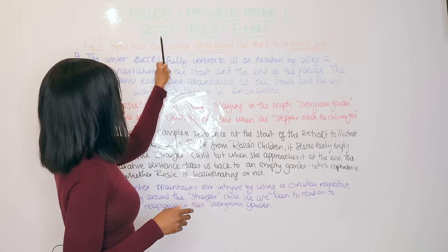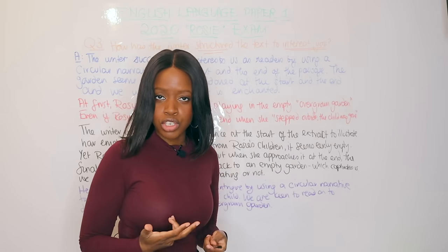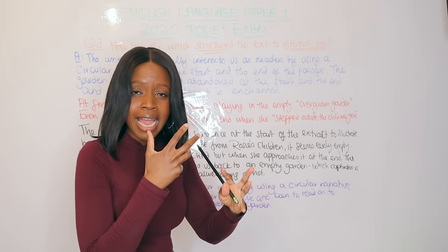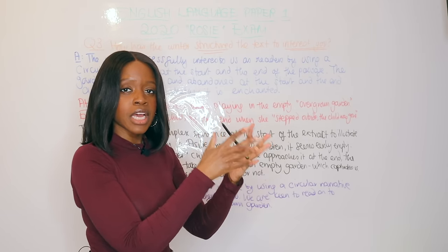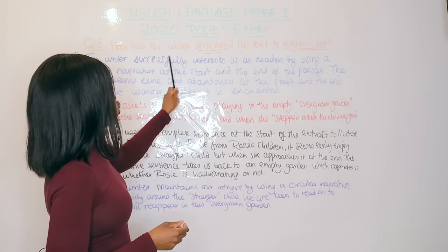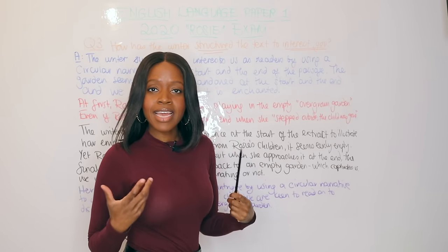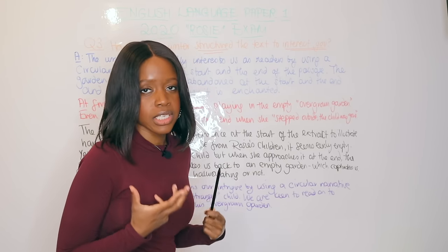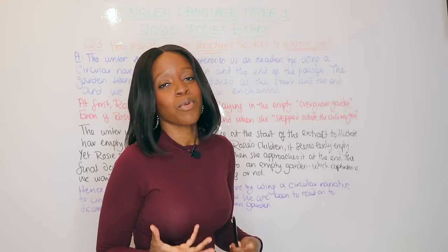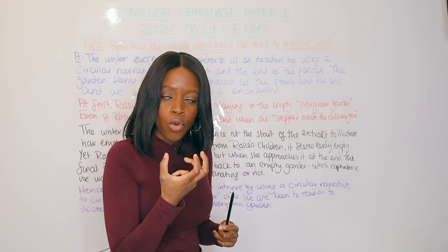This question relates to the 2020 Rosie exam — the one to do with Rosie and the stranger child. This question is the structure question; it tends to ask how the writer has structured the text to interest you as a reader. You are always interested as a reader — you never say that you're bored, even if you find the text quite boring. You always find structural elements that illustrate your interest.